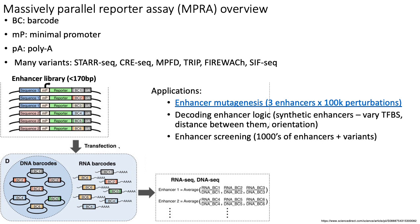That's the basic MPRA assay. The other ones are basically some variant of that, which allow you to test longer enhancers or have higher throughput. Some of the major applications of MPRAs include what you would call enhancer mutagenesis — the idea that sometimes when you identify enhancers through epigenome sequencing, some of these enhancers are multiple KB long, and you want to narrow down within this huge enhancer sequence where all the transcription factor binding sites are.